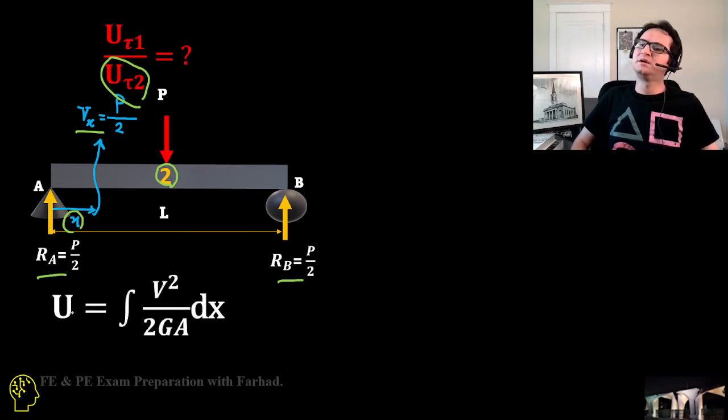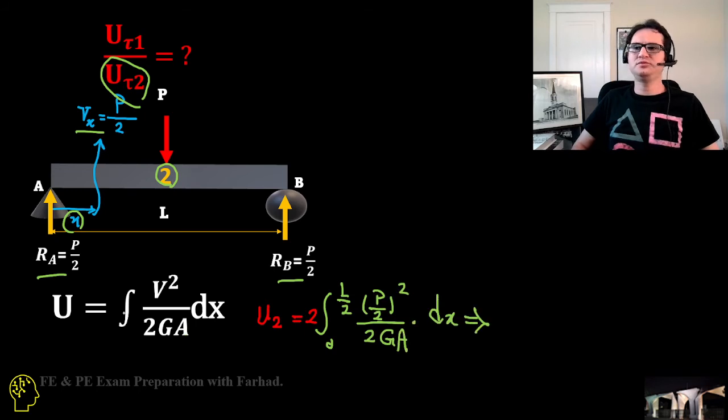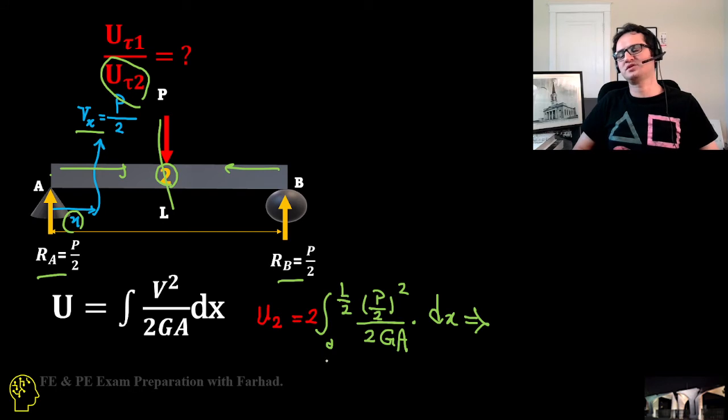Again, U equals integration of V² over 2GA times dx. To calculate U2, be careful—integrate once for half to the center and once for the other half. That's an integration from 0 to L/2 to the centroid: (P/2)² over 2GA then dx.